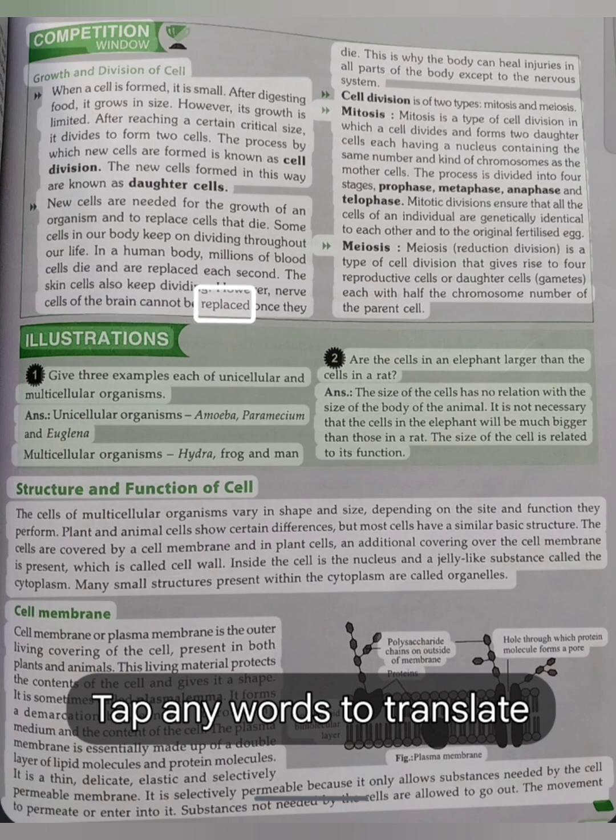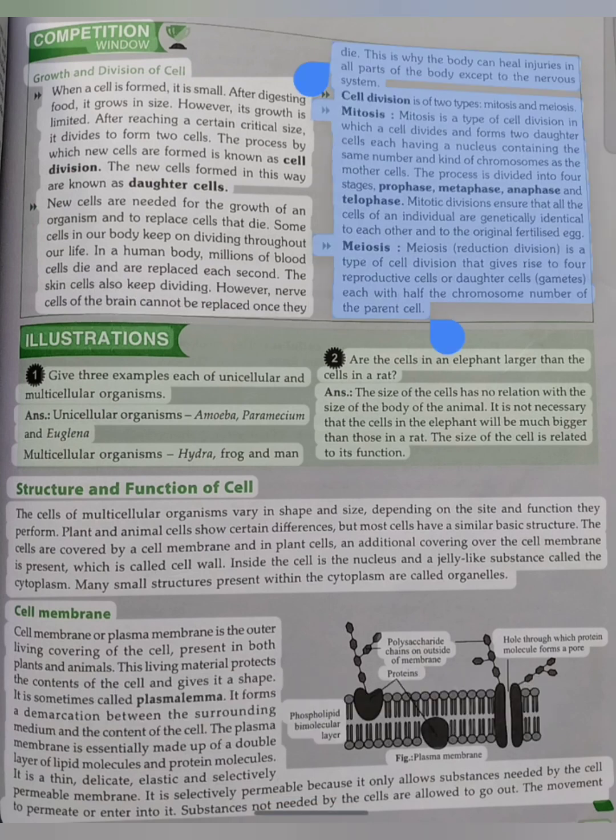However, nerve cells of the brain cannot be replaced once they die. This is why the body can heal injuries in all parts of the body except to the nervous system. Cell division is of two types: mitosis and meiosis. Mitosis: Mitosis is a type of cell division in which a cell divides and forms two daughter cells, each having a nucleus containing the same number and kind of chromosomes as the mother cells. The process is divided into four stages: prophase, metaphase, anaphase and telophase.